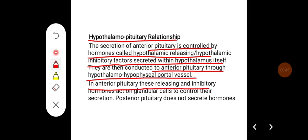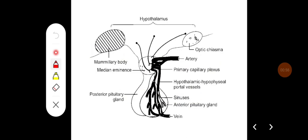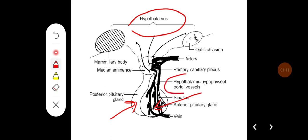In the anterior pituitary, these releasing and inhibiting hormones act on glandular cells to control their secretion, and posterior pituitary does not secrete hormones. This diagram shows the hypothalamus and the pituitary, where the anterior pituitary is related to the hypothalamus through hypothalamo-hypophysial portal vessels. Both inhibitory and stimulatory hormones secreted from hypothalamus run down into these portal vessels and reach the anterior pituitary.